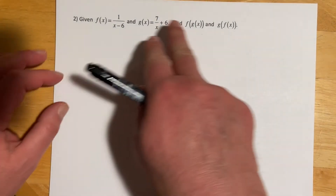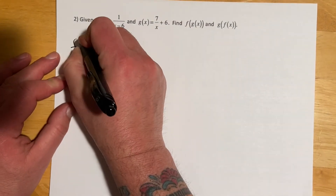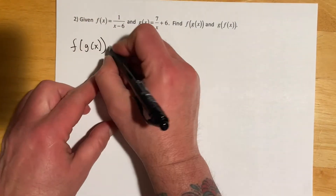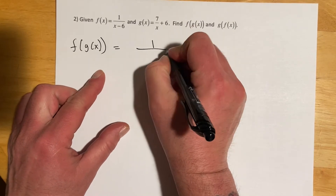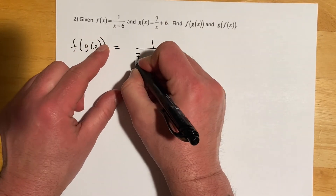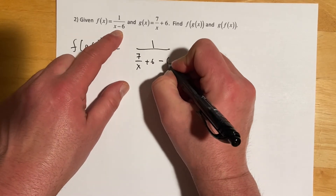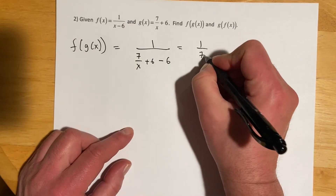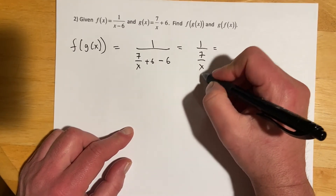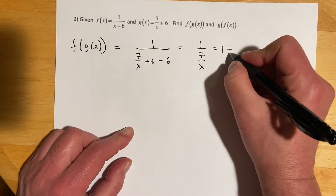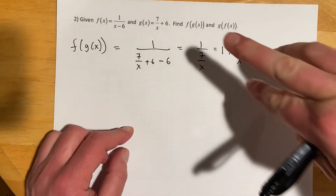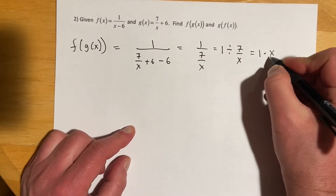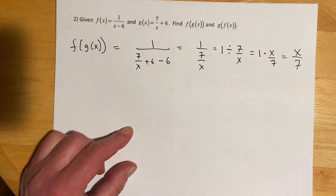Question 2, same directions. For f of g of x, we plug g of x into f. So x becomes 7 over x plus 6, giving us 1 over 7 over x plus 6 minus 6, which simplifies to 1 over 7 over x. Writing that as 1 divided by 7 over x makes it easier — we just take the reciprocal to get 1 times x over 7, which is x over 7.